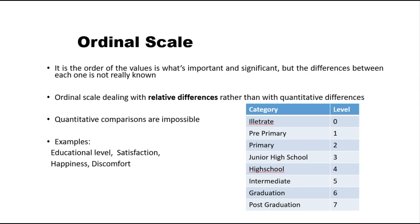But suppose we ask the same question in a different format — like how many years of schooling you have. Then the answer will be in terms of years: 10 years, 11 years, 15 years. That is not ordinal; here we have quantification in terms of years. The same question can be asked in different ways and can change the type of data. So if we use categories as in the table, it is ordinal; if we ask in terms of years of schooling, it becomes quantified data, not qualitative.